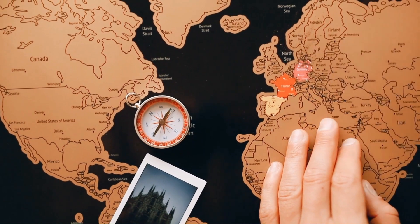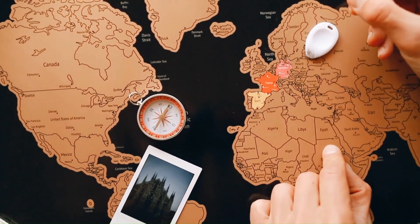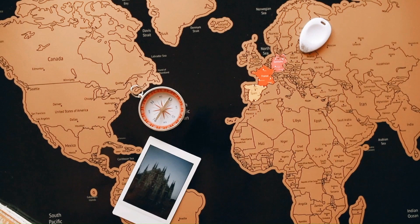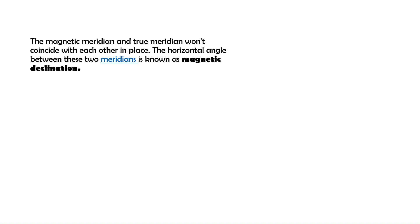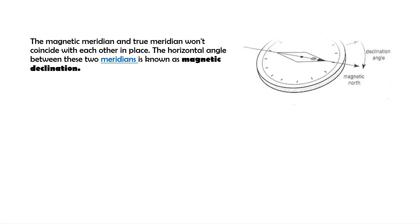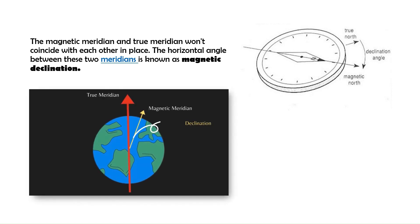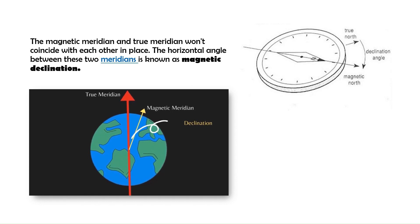It is important to note that the magnetic meridian is not the same as the true meridian. The magnetic meridian and the true meridian can differ due to magnetic declination, which is the angular difference between the magnetic north and the true north. A separate video on what is declination in surveying has been made and the link is provided in the card above.